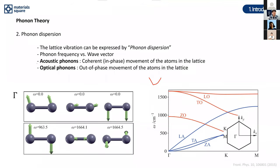Acoustic phonons are defined by the coherent, in-phase movement of atoms in the lattice. By contrast, optical phonons involve out-of-phase movement of atoms. In this phonon dispersion relation, you can see the Gamma point phonons represented, with three acoustic phonons and three optical phonons at the Gamma point.